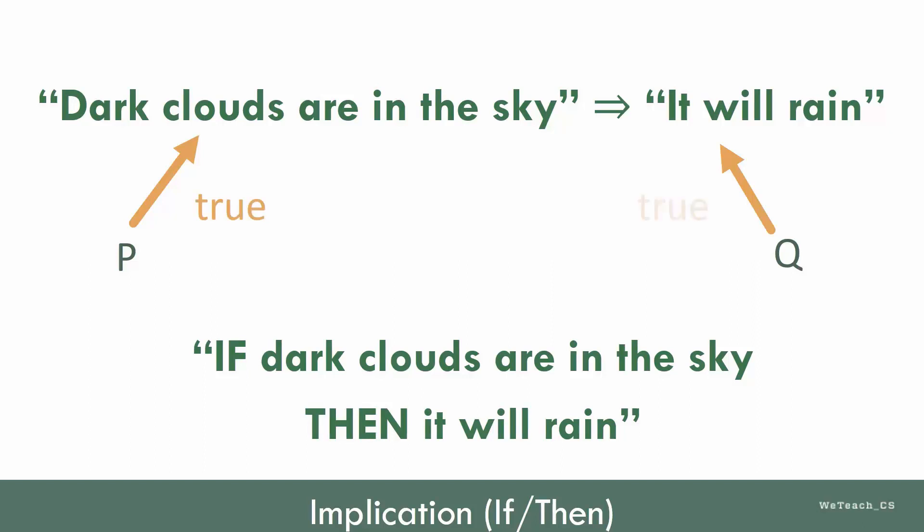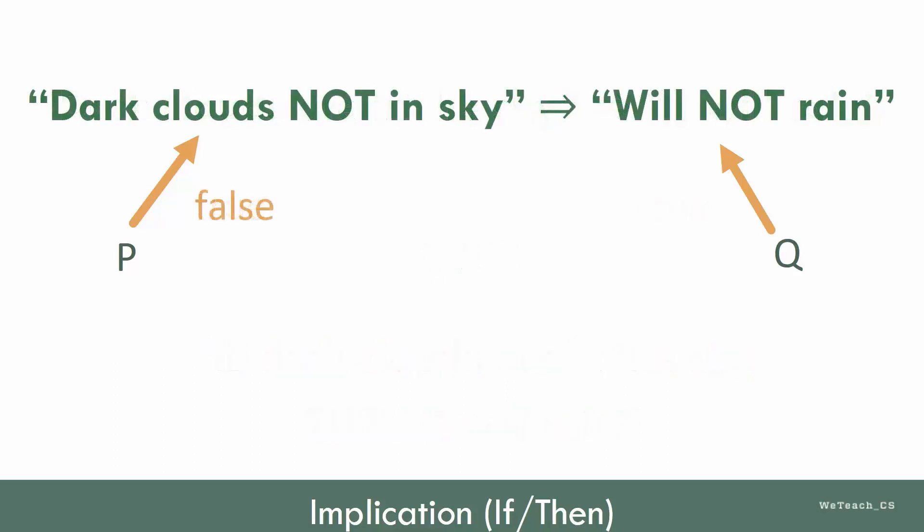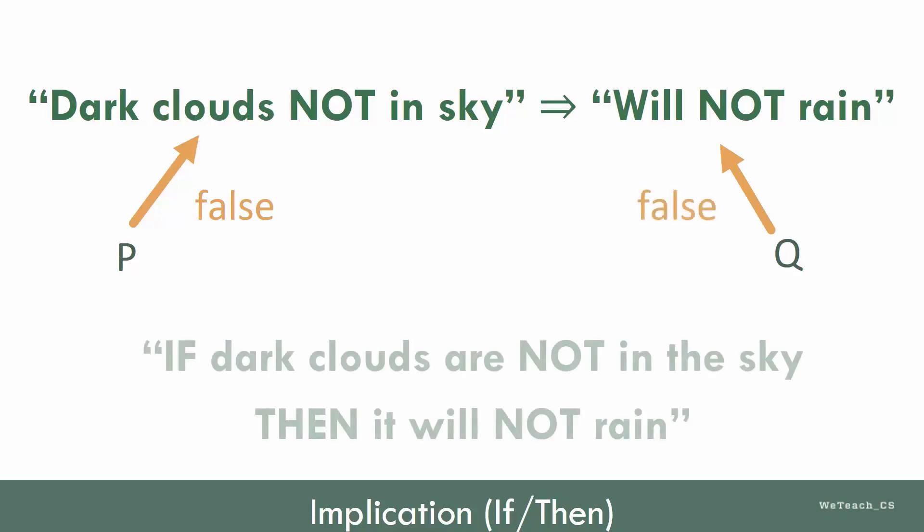When P is true, Q will always be true, based on the rules of implication. What about if P is false, meaning there are no dark clouds in the sky? Can Q also be false? Yes. This is called an inverse statement, which is always true for an implication statement. Again, according to the rules.